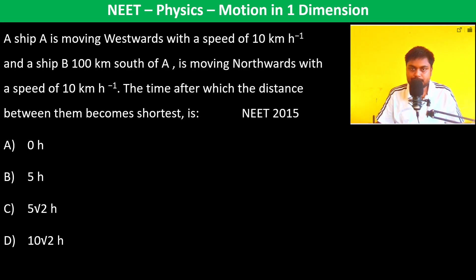A ship A is moving westwards with a speed of 10 kilometer per hour. So this is ship A and it is moving westwards 10.